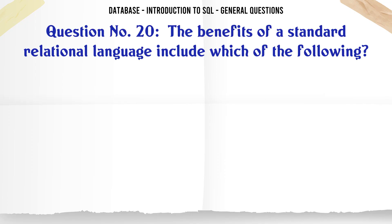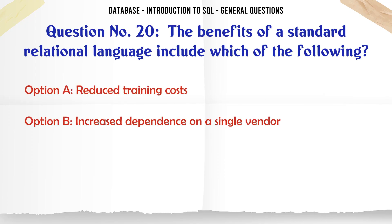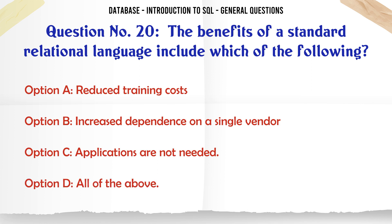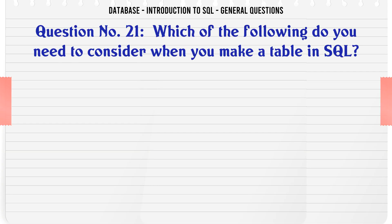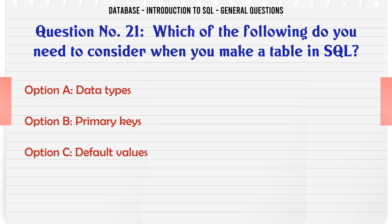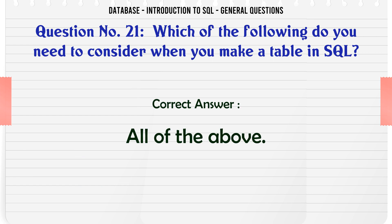What do you need to consider when you make a table in SQL? A. Data types. B. Primary keys. C. Default values. D. All of the above. The correct answer is: all of the above.